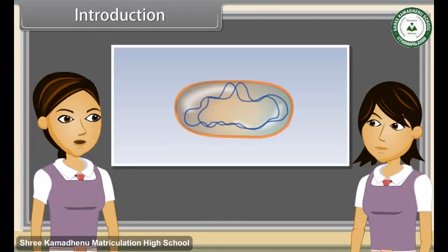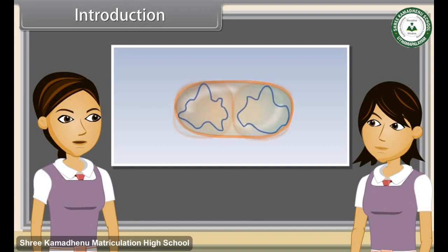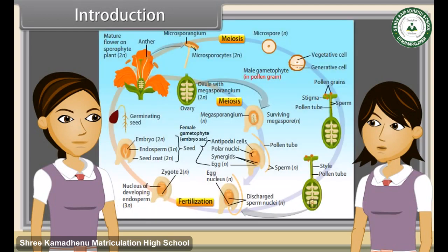As we have already discussed, reproduction is the ability of all organisms to produce young ones similar to themselves in most characters. The process which involves fusion of male and female gametes to form a new individual is known as sexual reproduction.